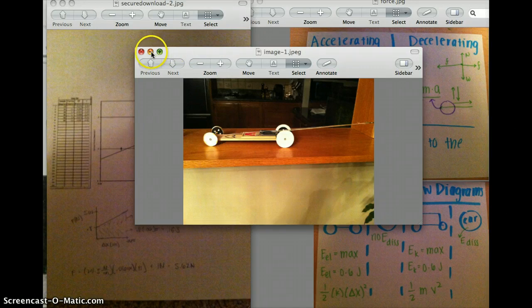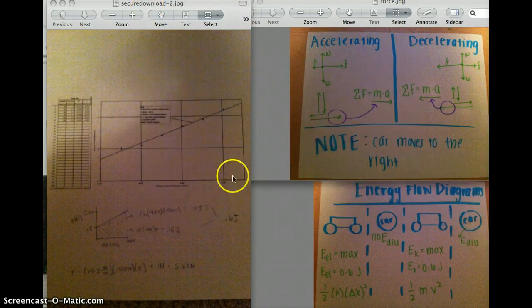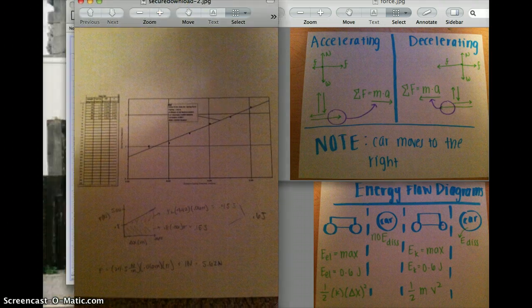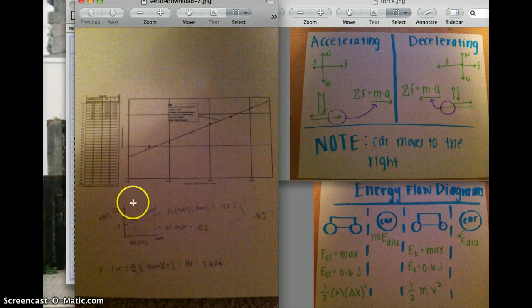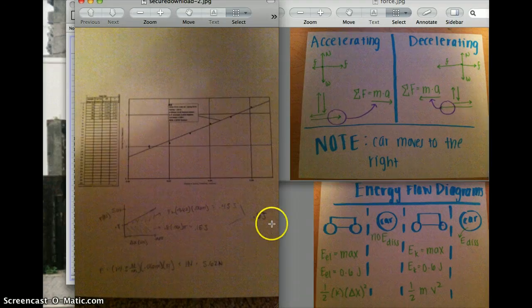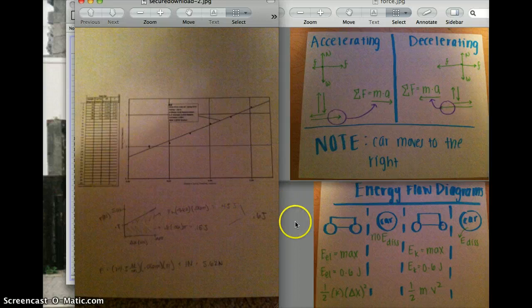First I found the energy in the spring with the graph using the torque wheel. I calculated the force on the spring and then put it on the graph and found the elastic energy, which ended up being 0.6 joules.